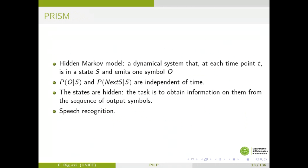Now let's start with parameter learning and consider PRISM. A PRISM program can encode a hidden Markov model. A hidden Markov model is a dynamical system that at any time point is in one state from a finite set and emits one symbol from a finite set. At the next time point, the system transitions to a new state and emits another symbol. Transition and emission are probabilistic. It is called Markov because the probability of the next state depends only on the current state, and hidden because you observe only the emitted symbols.